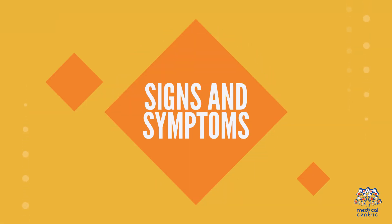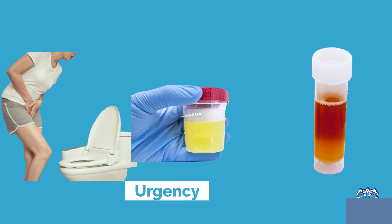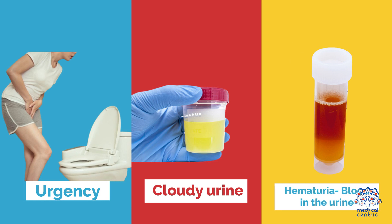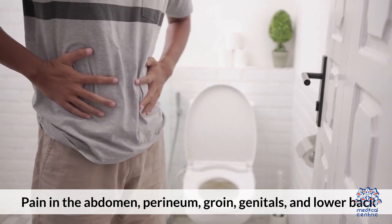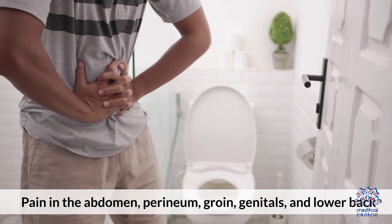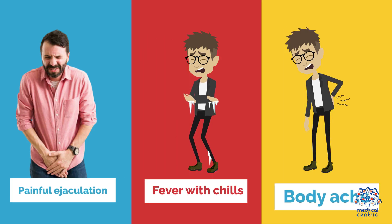Signs and symptoms include painful micturation, dysuria, burning micturation, difficulty in urinating, dribbling, hesitant urination, increased frequency of urination, urgency, cloudy urine, hematuria (blood in the urine), pain in the abdomen, perineum, groin, genitals, and lower back, painful ejaculation, fever with chills, and body ache.